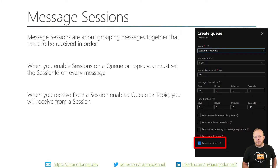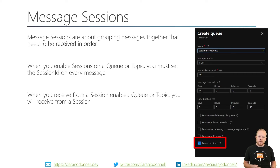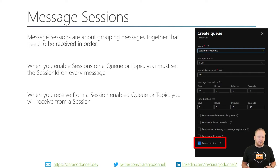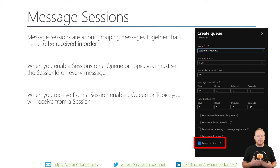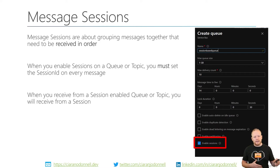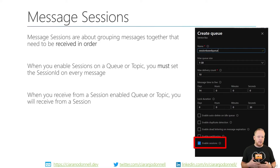The other concept is message sessions. This is about grouping messages together that need to be received in order relative to each other. When you enable message sessions on a queue or topic, you have to set the session ID on every message you send to it. When you receive them, you have to receive from a specific session. You enable it by setting 'enable sessions' when you create the queue or topic, and from that point on it's on for the entire queue or topic — every interaction with it has to be in the context of a session.